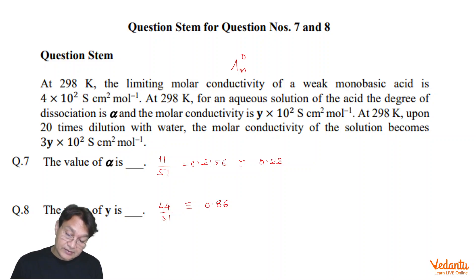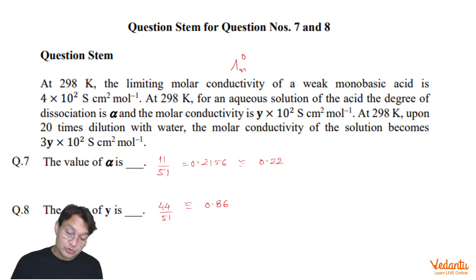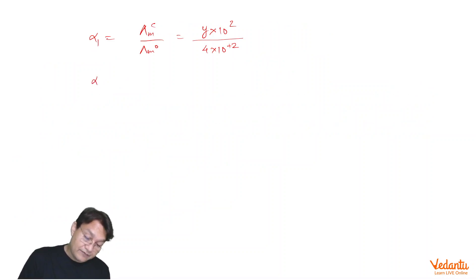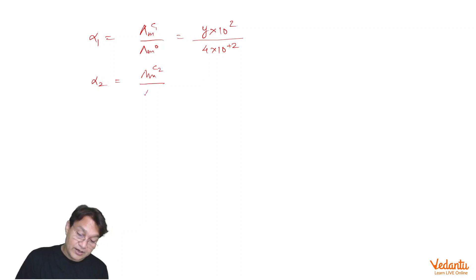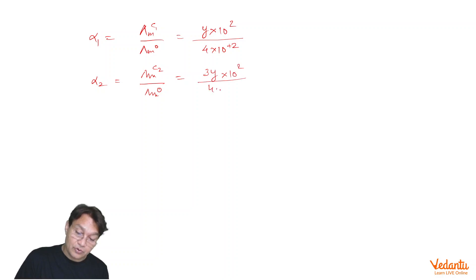Similarly, in the diluted situation, the molar conductivity becomes 3y×10². So in the diluted condition, alpha2 = λM(C2) / λM0 = 3y×10² divided by 4×10².